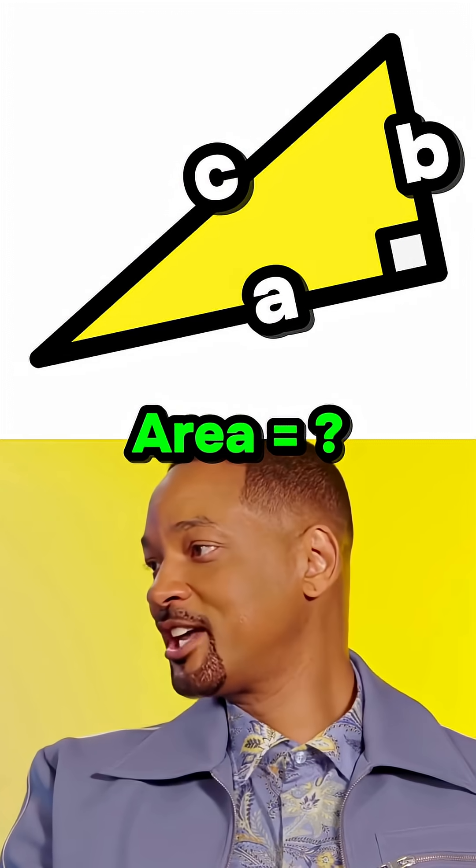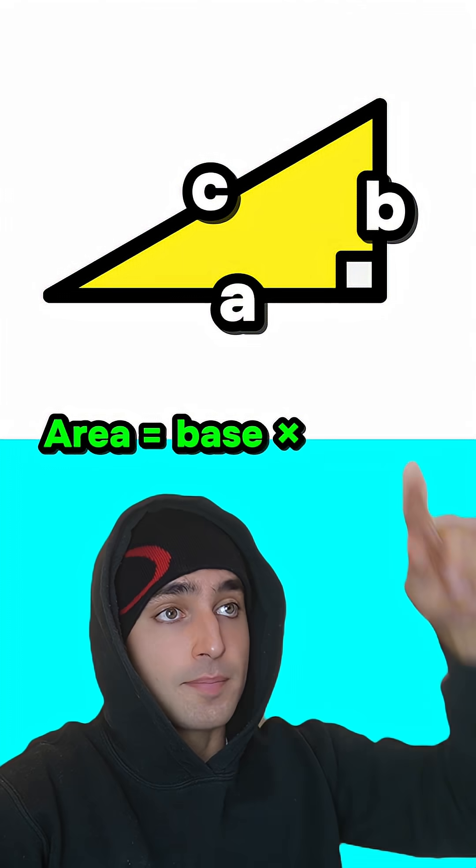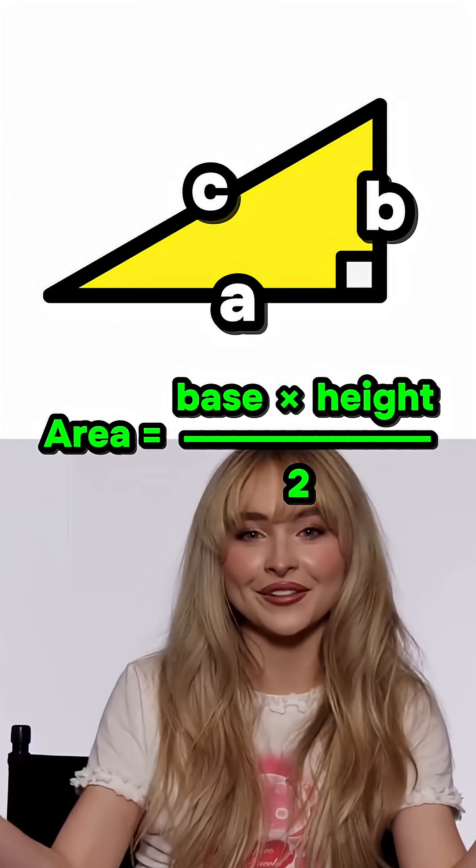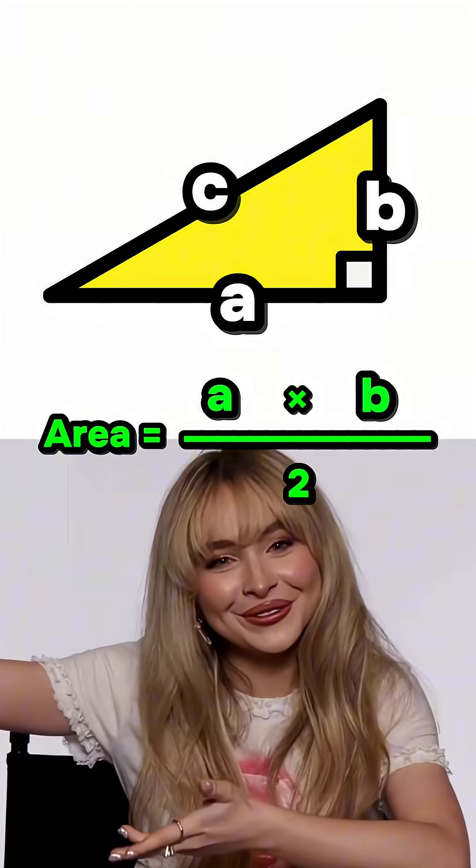Well, what's the area of this triangle? It's base times height divided by two. So here, that's AB over two. Thanks, Abby.